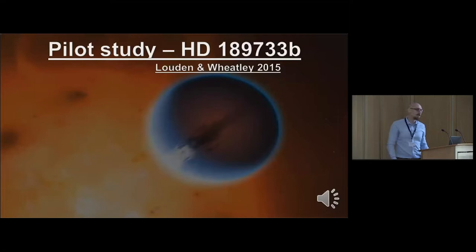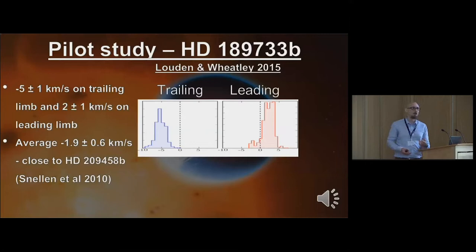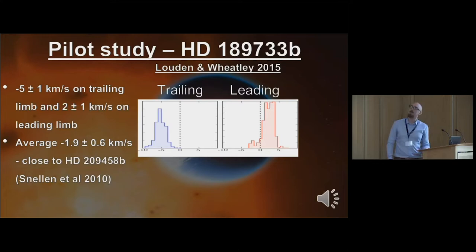I did a study on HD189733b a couple of years back to see if this technique was viable - whether you could scan the limb of the planet as it transits. Taking all of these things into account, I found it was possible to separate out the eastern and western limb contributions. Looking specifically at sodium absorption and how the velocity of the absorbed sodium line changes as a function of time, I found that on the trailing or western limb there's a velocity of about five kilometers per second coming towards you, and on the other side, two kilometers per second going away - the rotation of the planet in the eastward jet, just as predicted.